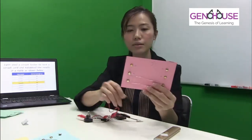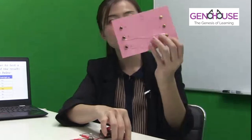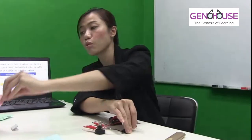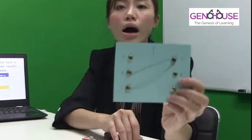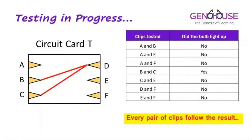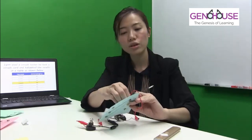For card S, I test B and C — the light bulb lights up. This appears to be a card Lynn used. Let me also check card T. Testing B and C on card T — it lights up as well. This is also one of the cards Lynn used.